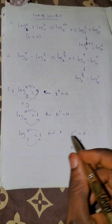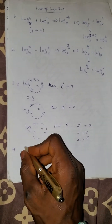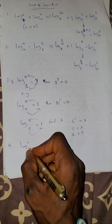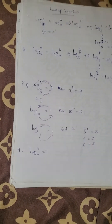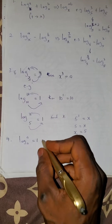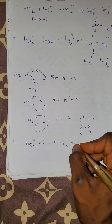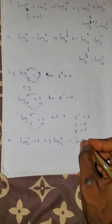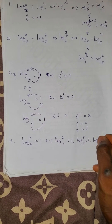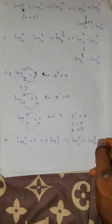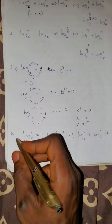Take note of this law: log a base a equals 1. That is, the log of any number to the base of that same number equals 1. So log 2 base 2 equals 1, log 5 base 5 equals 1, log 7 base 7 equals 1.